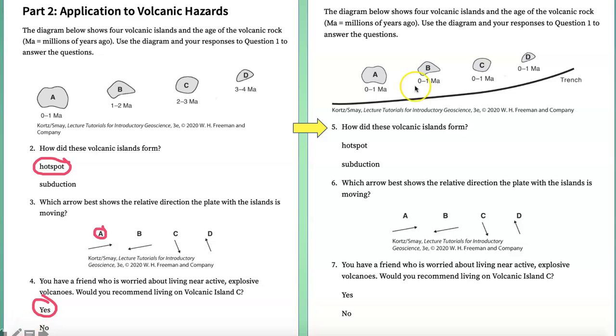On the next page, you see another series of islands, but this time they are active and they are all the same age. There is also an ocean trench parallel to the line of the islands. So, how did these islands form? Well, these must have formed from subduction. Subduction is occurring and each of these islands is active.